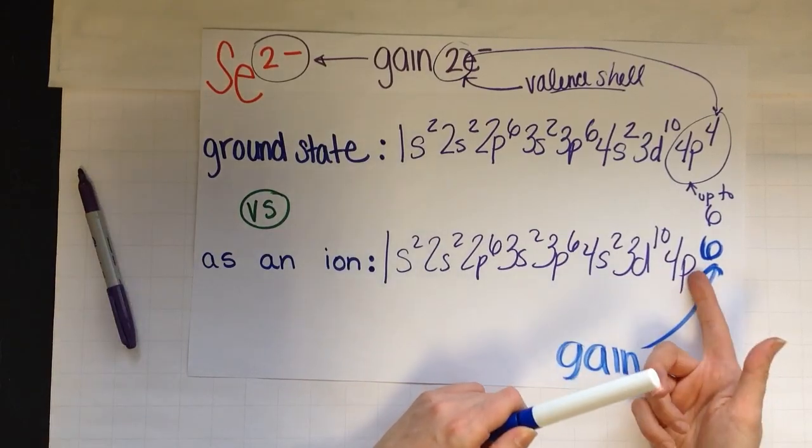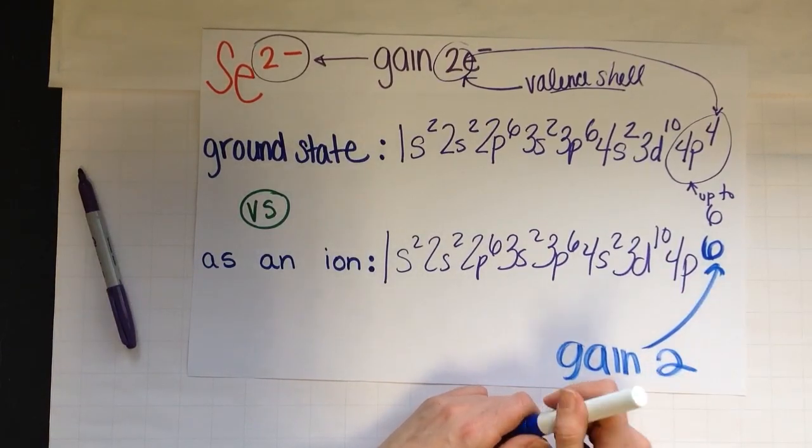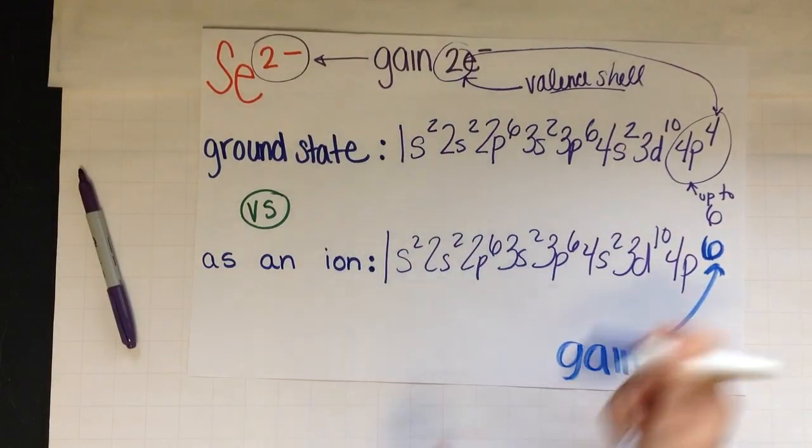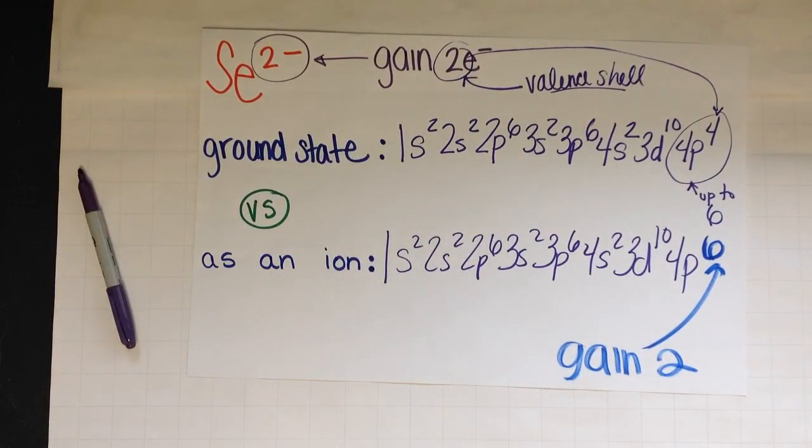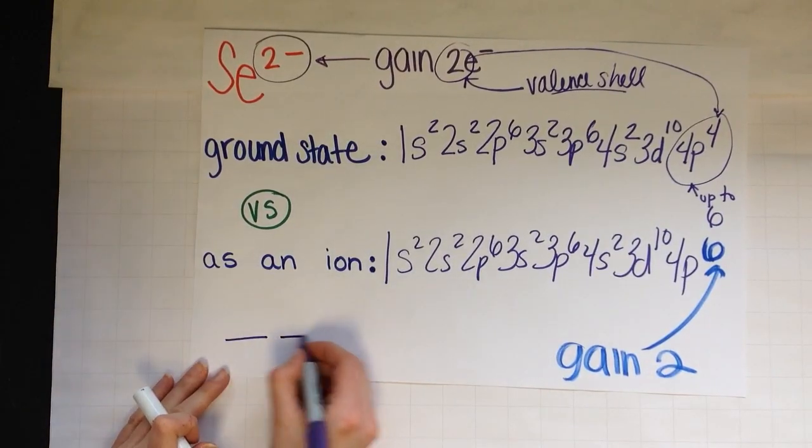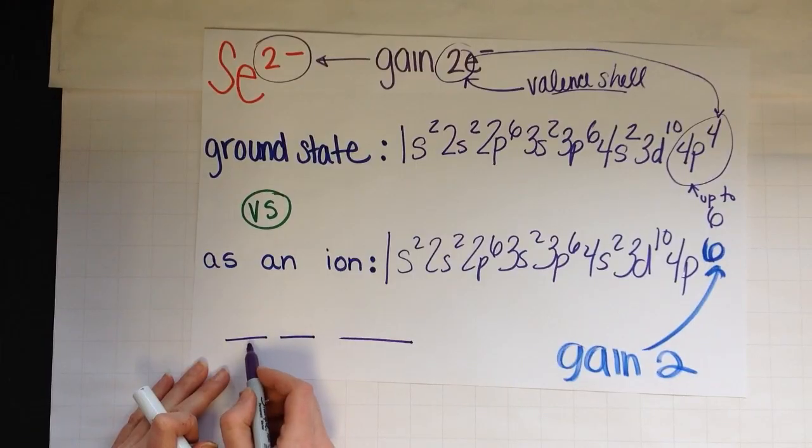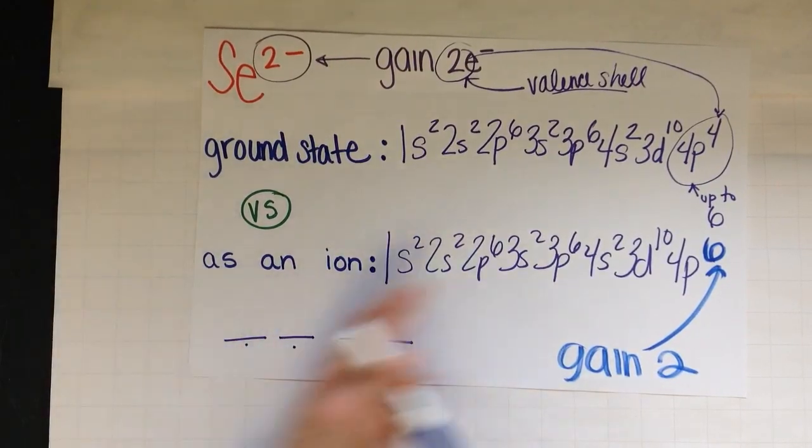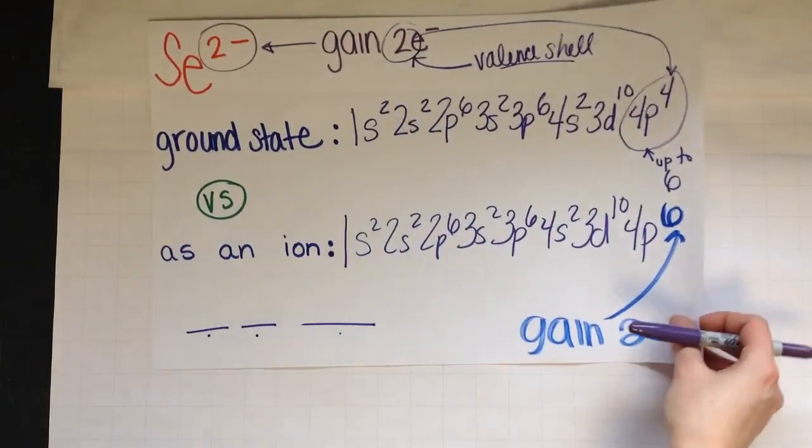If p was full, then I have to introduce the next energy level and the next sublevel. But because p has more room, remember p can hold up to six. If you remember, p has three sublevels or orbitals and each one can hold up to two, 2, 4, 6. And there was only four, so I can hold more.